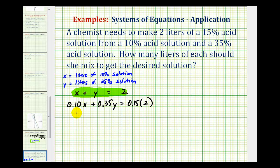Let's start by eliminating the decimals. If we multiply everything by 100, it's the same as moving the decimal point to the right two places. So we can write this as 10x plus 35y equals 15 times 2, which equals 30.